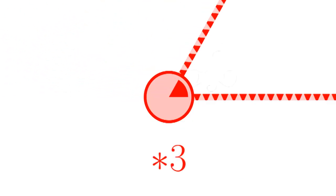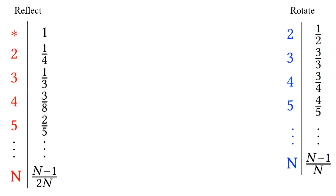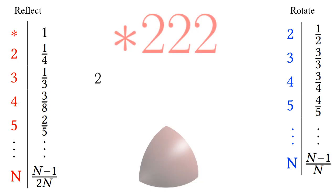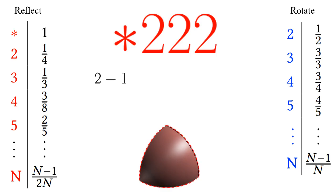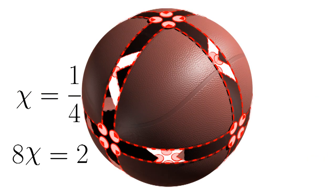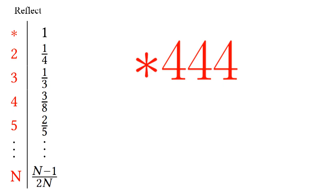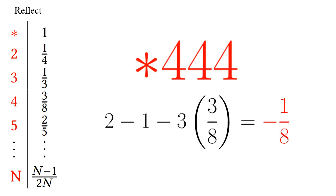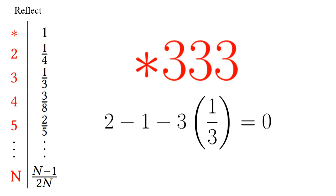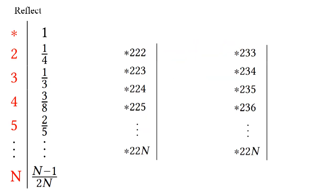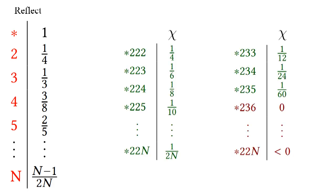Each time we add a symmetry, we lower the characteristic. We start with a value of two — the normal value for a planar graph — and then start subtracting. A basketball has the symmetries star-two-two-two, so that's two minus one minus one-quarter minus one-quarter minus one-quarter equals one-quarter. We copy the orbifold eight times to get a sphere. Now we can see why star-two-two-two is a valid symmetry, but star-four-four-four is not: it lowers the characteristic to negative one-eighth, and we would need to copy it negative 16 times, which makes no sense. Star-three-three-three is also invalid because it lowers the orbifold to zero. We just need to try all the different combinations and figure out when the characteristic stays positive.